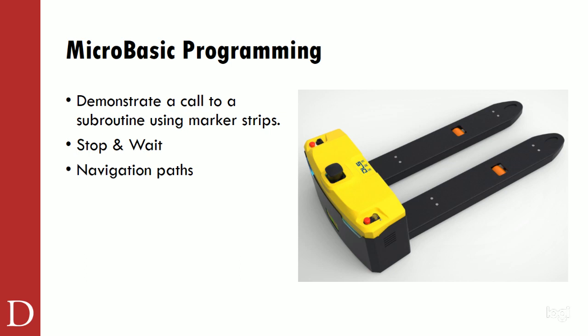Here's another neat example - a DLS AGV pallet jack from a Chinese or Japanese company. You can see how small these things get, and it has a little LIDAR on it. If it comes in close proximity to somebody, it's going to stop - really cool safety feature. Alright, let's do some micro basic programming.